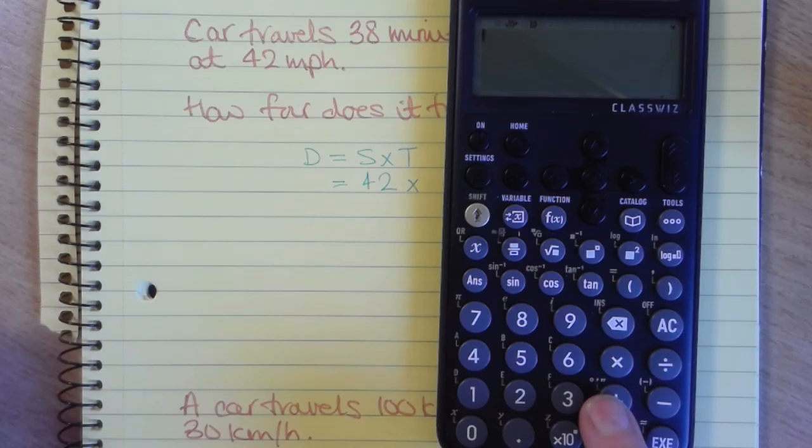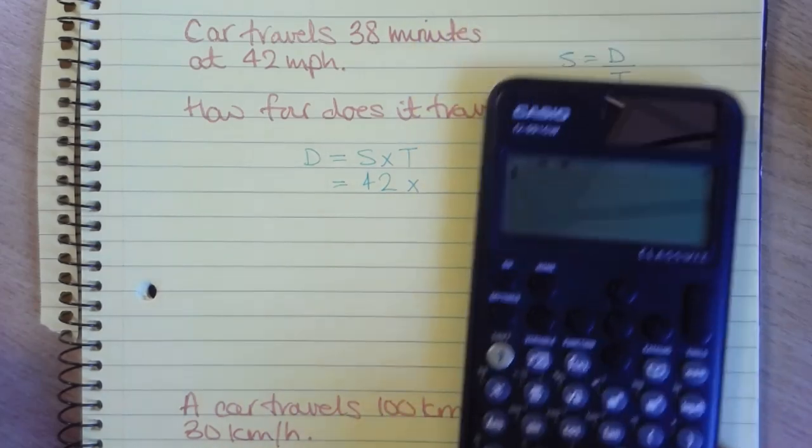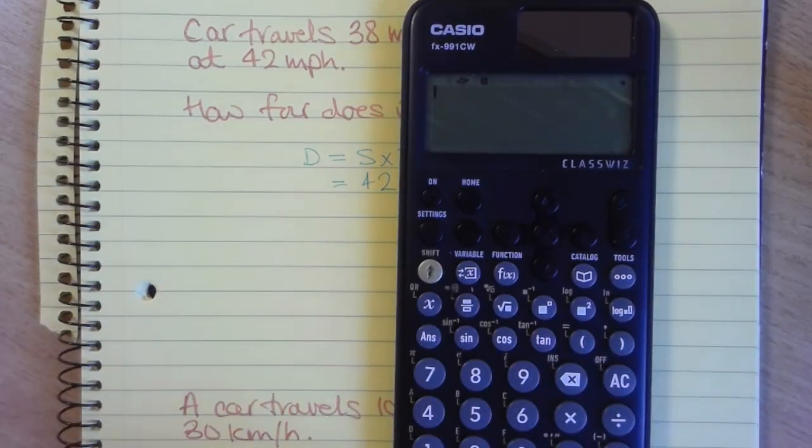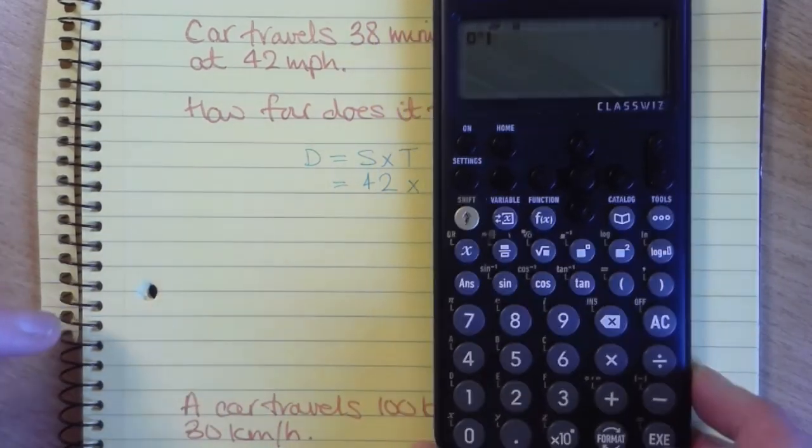If you look above it, it has these little funny apostrophe symbols. So to put in 38 minutes, we say 0, and then we press shift and the time button.